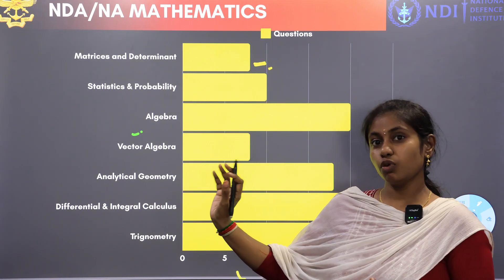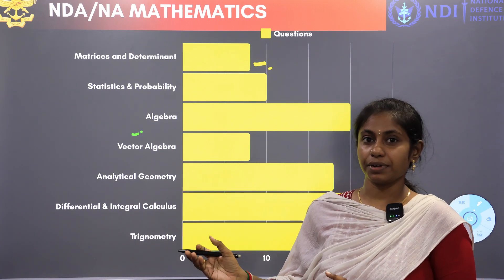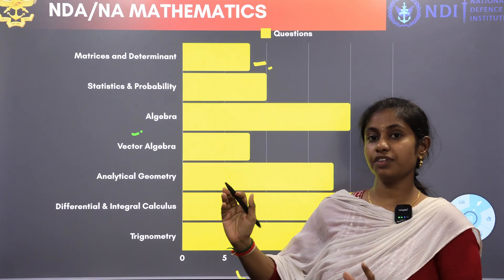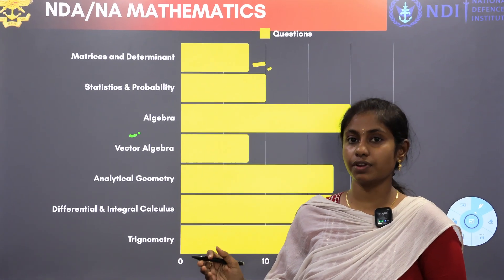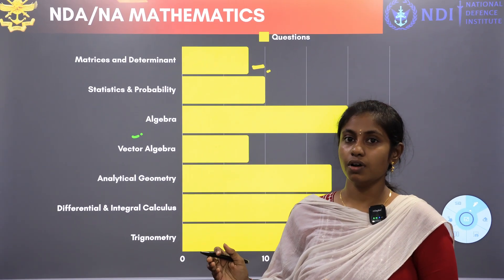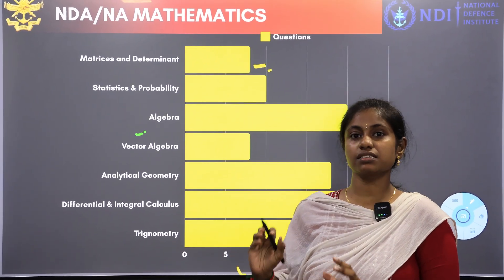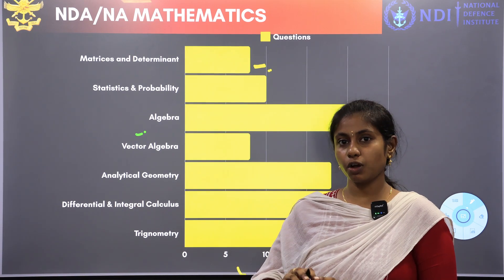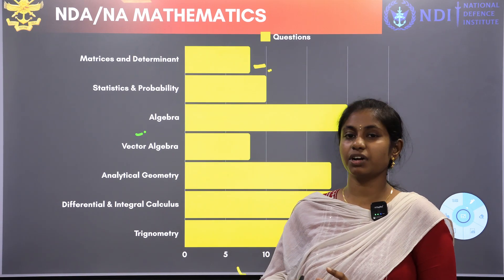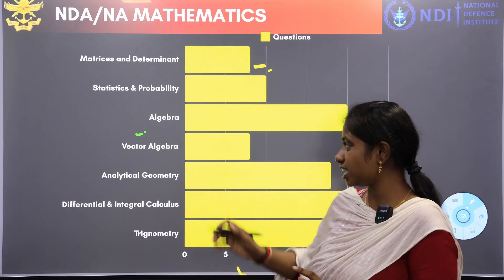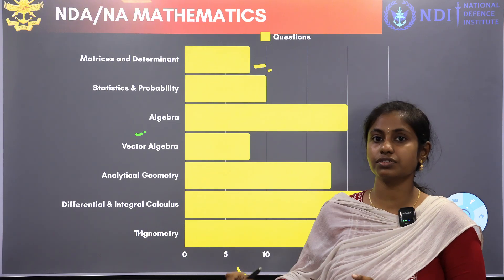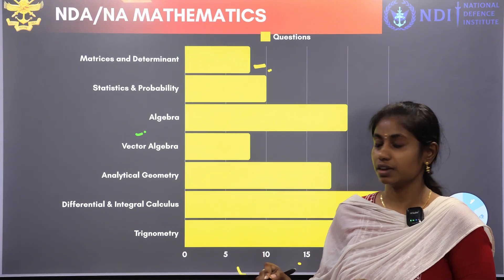Algebra is the most weighted chapter because there are 25 to 30 questions nearby. We have subtopics in algebra, and if you cover those subtopics, you can definitely attempt 25 questions.